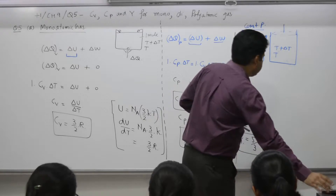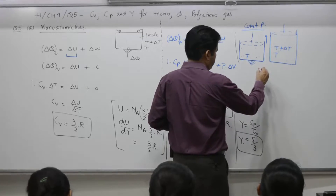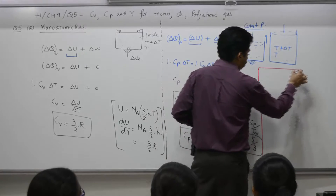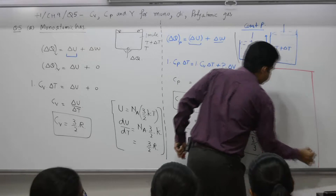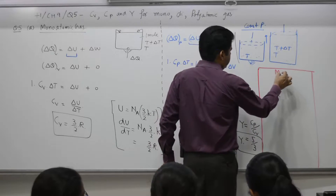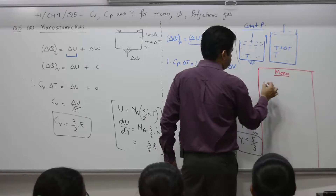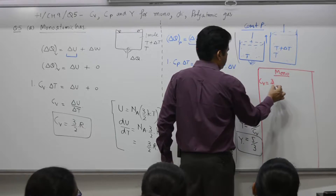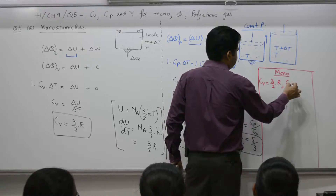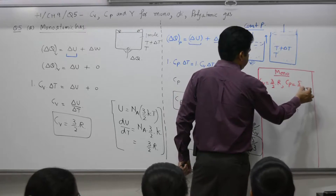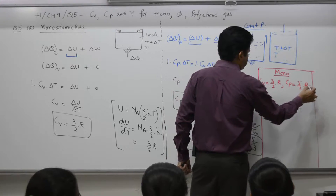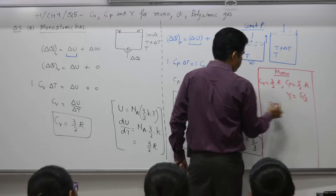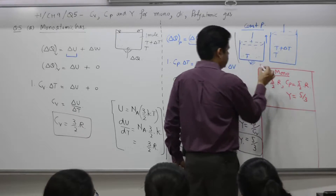We can write the conclusion in tabular form: monoatomic gas — Cv is 3/2 R, Cp is 5/2 R, gamma equals Cp by Cv equals 5/3. First part answered.